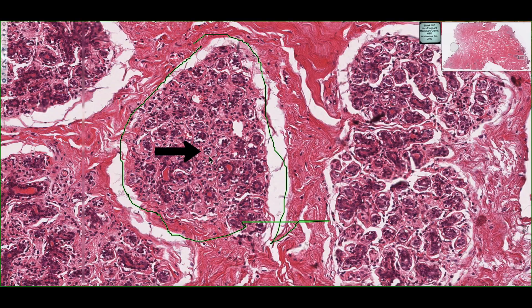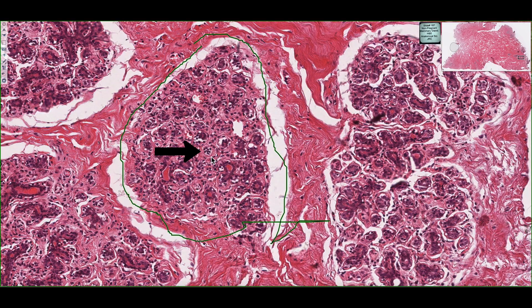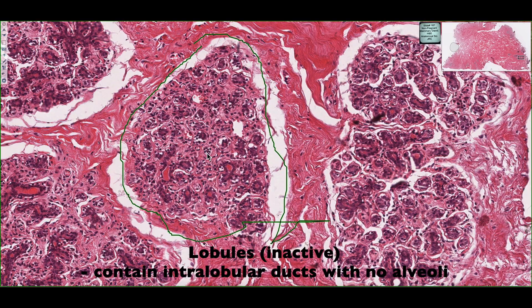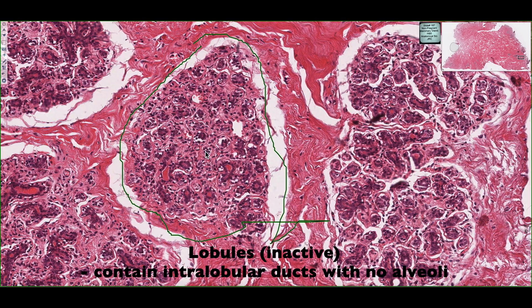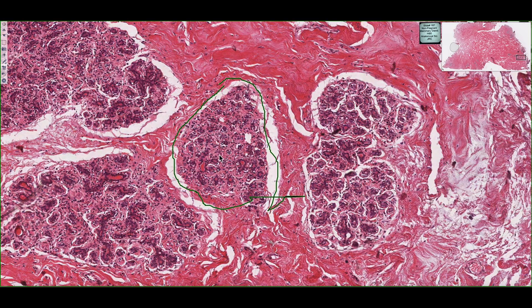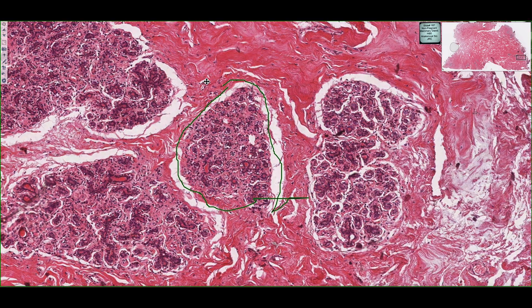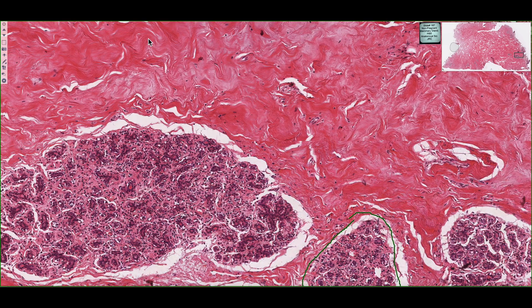This is an example of a terminal duct that I'm outlining. It's sort of circular because it's been cut in cross-section. Normally it would have a layer of low cuboidal cells surrounding it and a lumen. But due to the fact that this gland is inactive, and likely also due to processing, we actually don't see the lumen of this duct. Since this duct is inside this large lobule, they call it an intralobular duct.